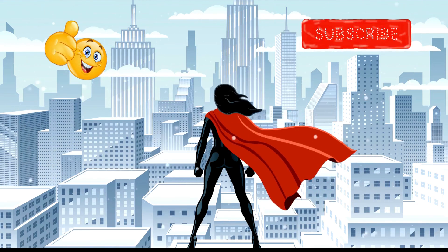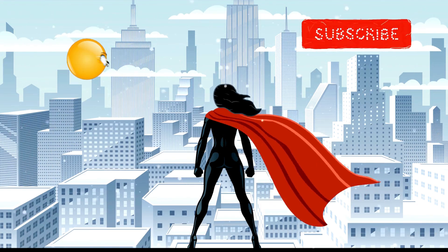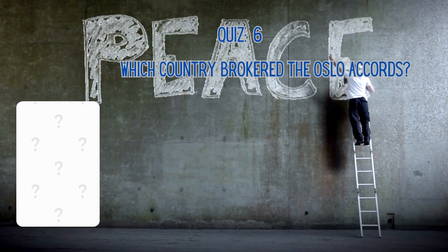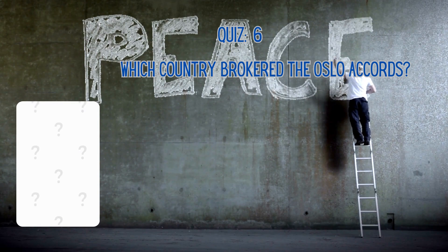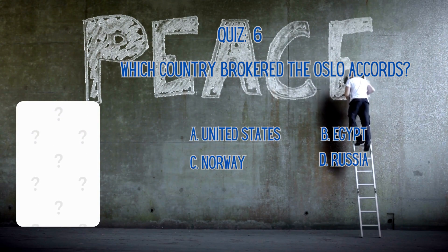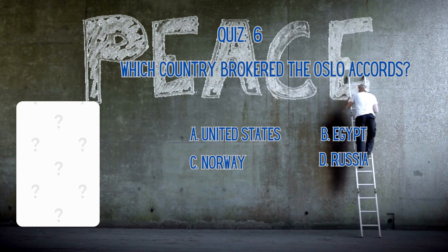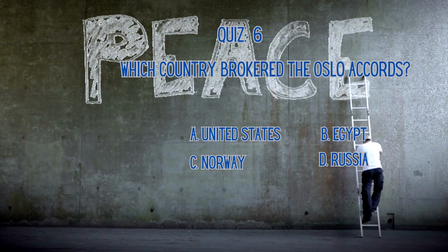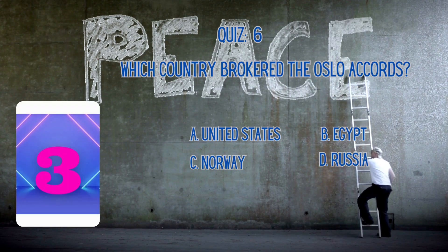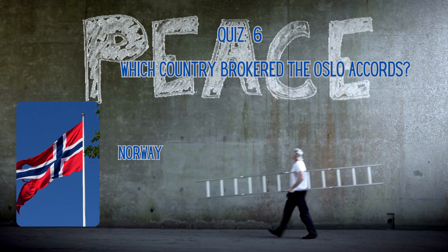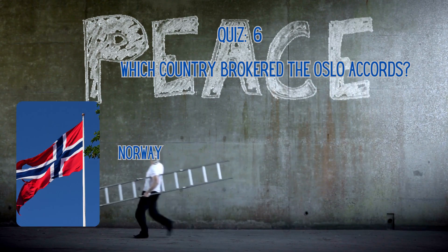Are you enjoying this so far? Don't forget to give it a thumbs up as we continue. Which country brokered the Oslo Accords? Is it A. The United States, B. Egypt, C. Norway, or D. Russia? The correct answer is Norway.